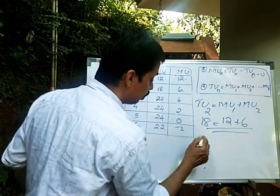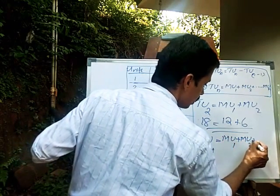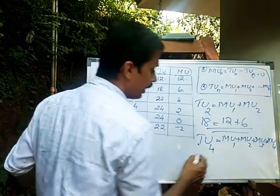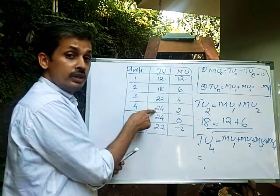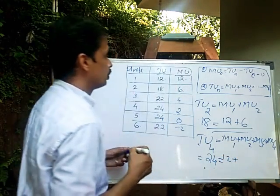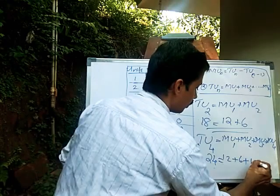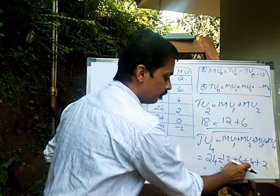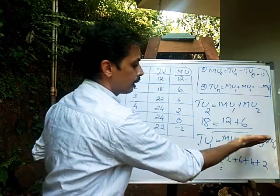Let us find TU4. TU4 equals MU1 plus MU2 plus MU3 plus MU4. Total utility when the consumer consumes the fourth unit is 24. So 24 equals MU1 (12) plus MU2 (6) plus MU3 (4) plus MU4 (2). 12 plus 6 is 18, plus 4 is 22, plus 2 is 24. So TU4 equals 24.